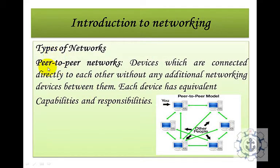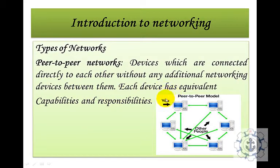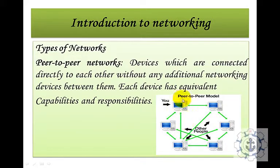First comes peer-to-peer networking. Devices are connected directly to each other without any additional networking devices between them. Each device has equivalent capabilities and responsibilities. In a simple peer-to-peer network there is no centralized resource called a server — all systems are peer-to-peer and interconnected for information interchange.